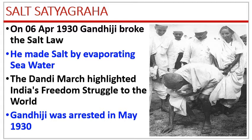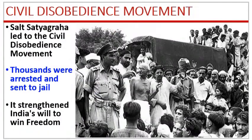Gandhiji was arrested in May 1930, but the Salt Satyagraha continued for about a year. The civil disobedience movement played a significant role in strengthening and reviving the Indian will to gain freedom.